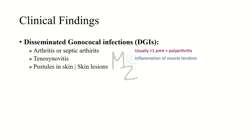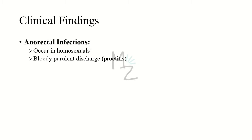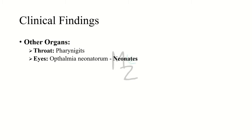Disseminated gonococcal infection can cause arthritis or septic arthritis — if it occurs in more than one joint, it is polyarthritis. There can also be tenosynovitis (inflammation of muscle tendons), pustules on skin, and skin lesions. Neonatal conjunctivitis affects neonates and occurs during delivery through the birth canal. It is also known as purulent conjunctivitis due to discharge from the neonate's eyes. Symptoms of neonatal conjunctivitis, also called ophthalmia neonatorum, appear within five days. Anorectal infection can occur in homosexuals, with bloody purulent discharge due to proctitis — inflammation of the lining of the rectum. If other organs are affected, there can be pharyngitis in the throat and ophthalmia neonatorum in neonates.